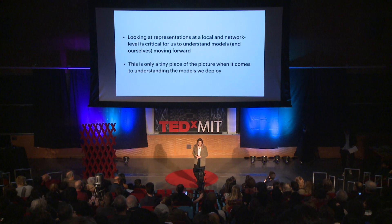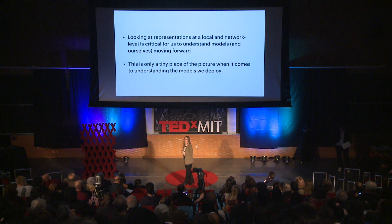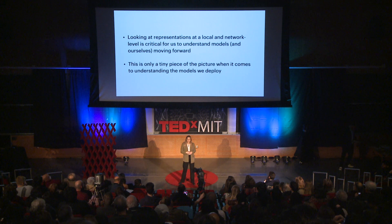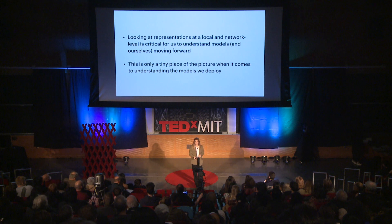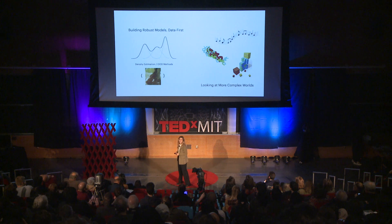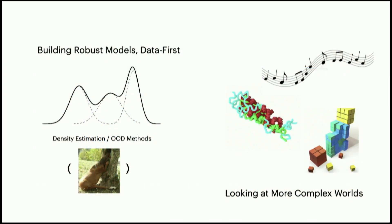The big takeaway from this is that looking at representations on a local and network level is critical for understanding both human and machine learning models and how they operate in the world. This is only a tiny piece of what we have to work towards building deployable models that are robust and understandable. For example, the computational complexity of large foundational models makes it hard to find internal representations, but we can approximate it and look at out-of-distribution methods.